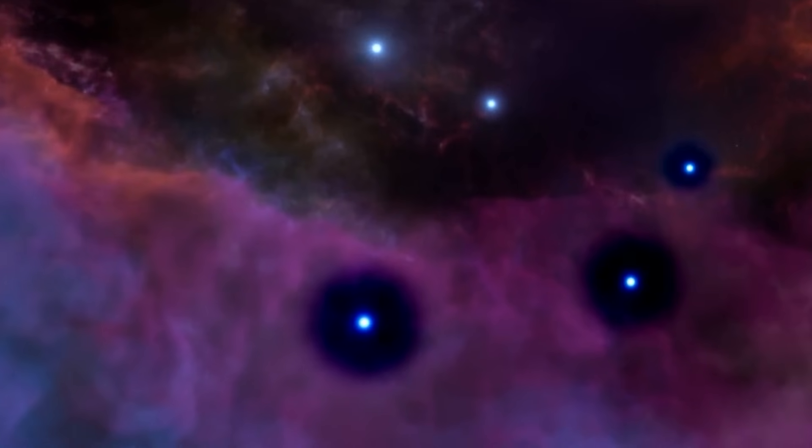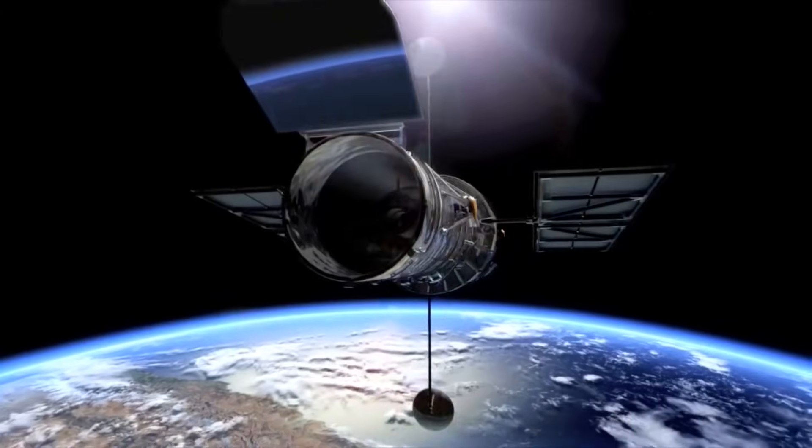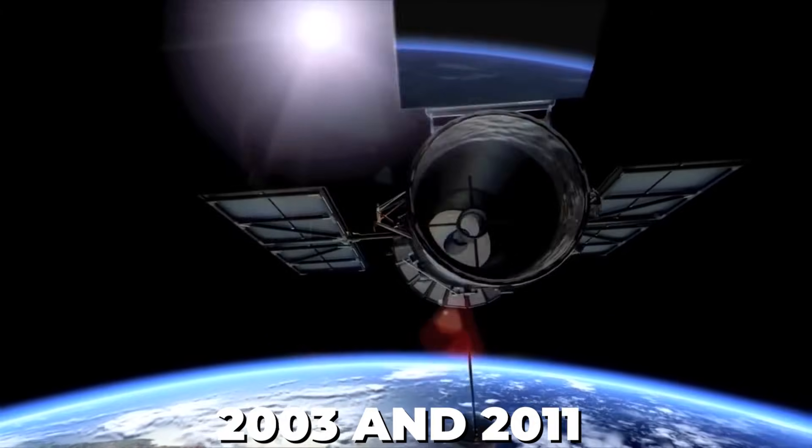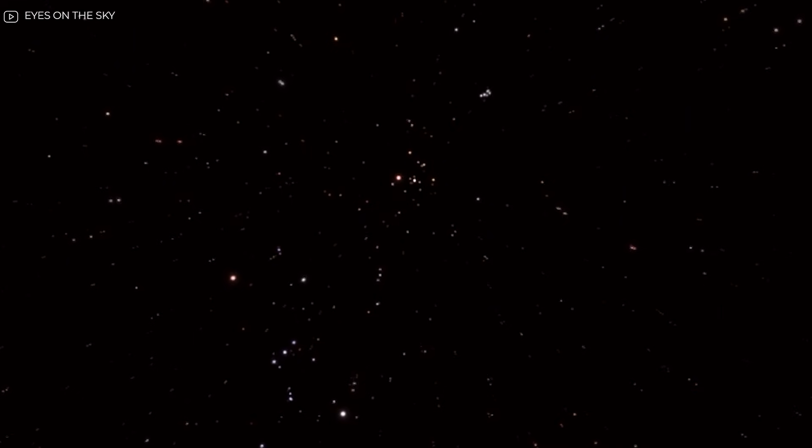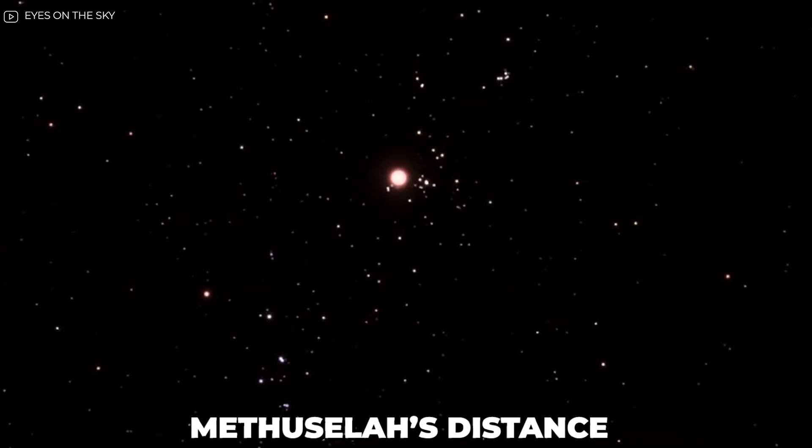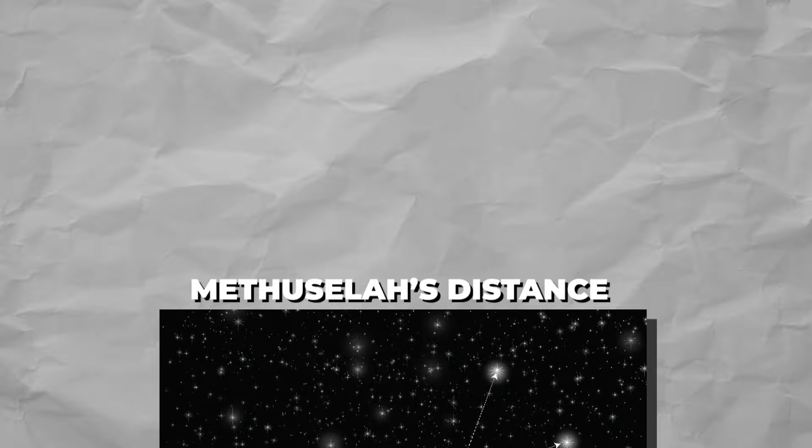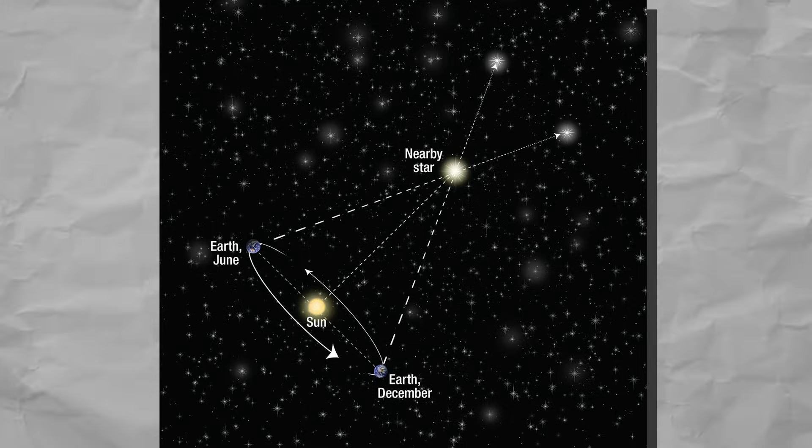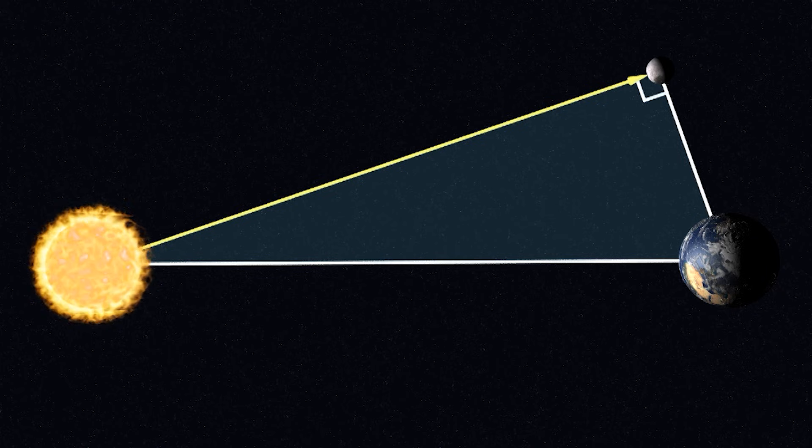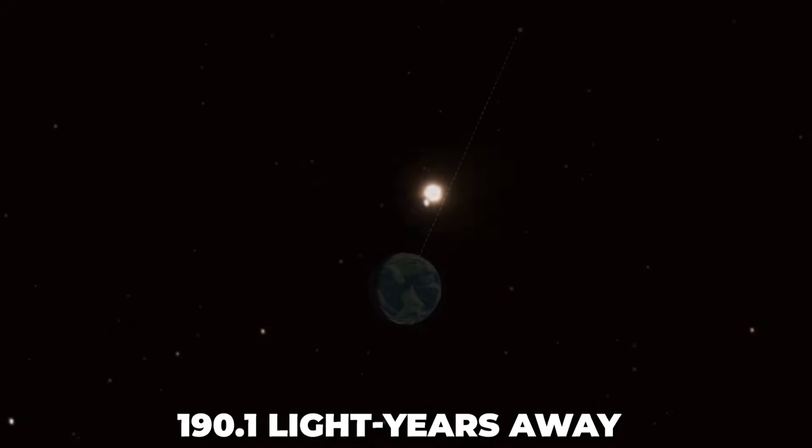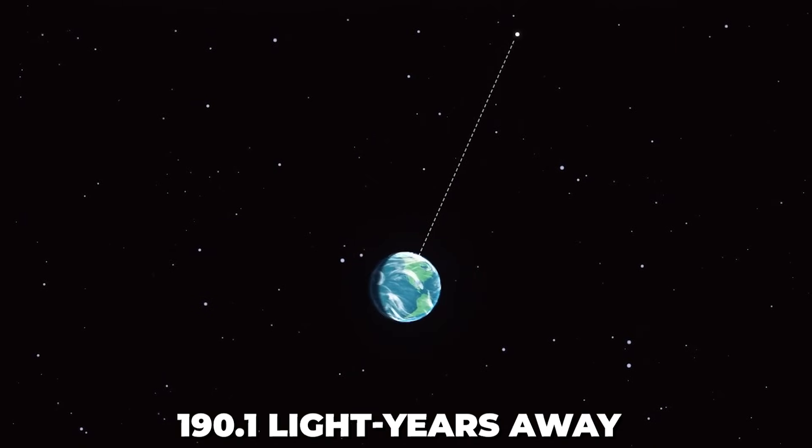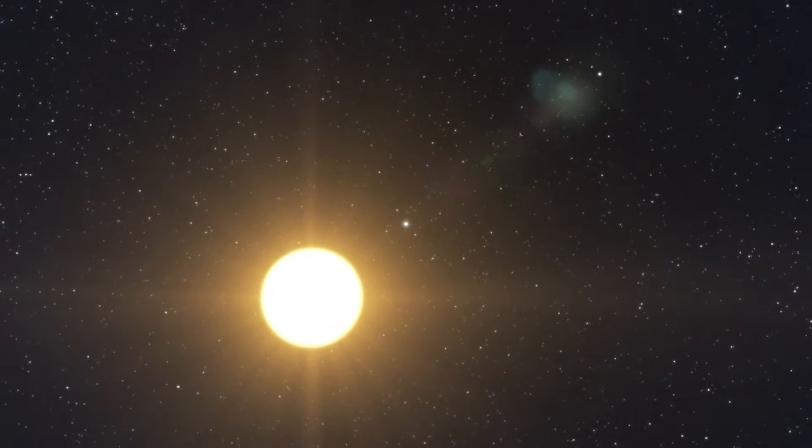For stars, distance is everything. Between 2003 and 2011, Bond's team used Hubble to nail down Methuselah's distance with parallax, watching how its position shifts as Earth orbits the sun, then using geometry to calculate 190.1 light years away.